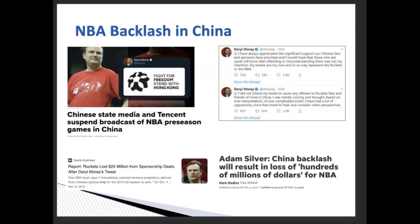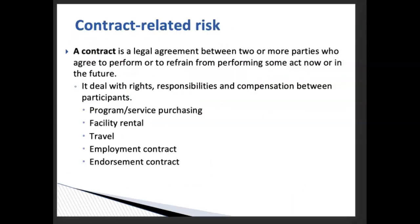The third risk is contract-related risk. A contract is a legal agreement between two or more parties who agree to perform or refrain from performing some act now or in the future. It deals with rights, responsibilities, and compensations between participants. As an organization, we create contracts with many internal and external stakeholders. For instance, when we run a facility, we negotiate a contract that indicates how long we can use it and that if anything gets damaged, we will be fully responsible for repairs or replacement.